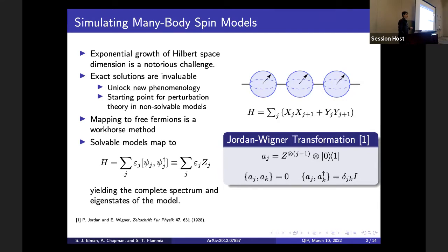Once I've mapped this to a quadratic, I can diagonalize the exact single-particle Hamiltonian to get a model in terms of canonical eigenmodes. These epsilon_j's are the single-particle energies, and the commutators act like Z_j Pauli operators — commuting operators in some basis that each contribute a unit of energy epsilon_j. Doing this yields the complete spectrum and eigenstates of the model, from which we can get almost anything we want.